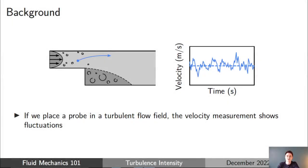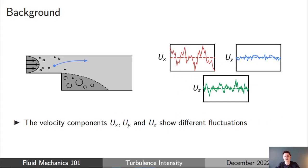Let's start with some physical understanding about what turbulence intensity actually represents. Think about a turbulent flow field of any kind. If we place a probe in the turbulent flow field to measure the velocity, the velocity measurement over time will show fluctuations. If we measure the different components of the velocity vector in the x, y, and z coordinate directions, each of the velocity components will show different fluctuations and may show a different mean value.